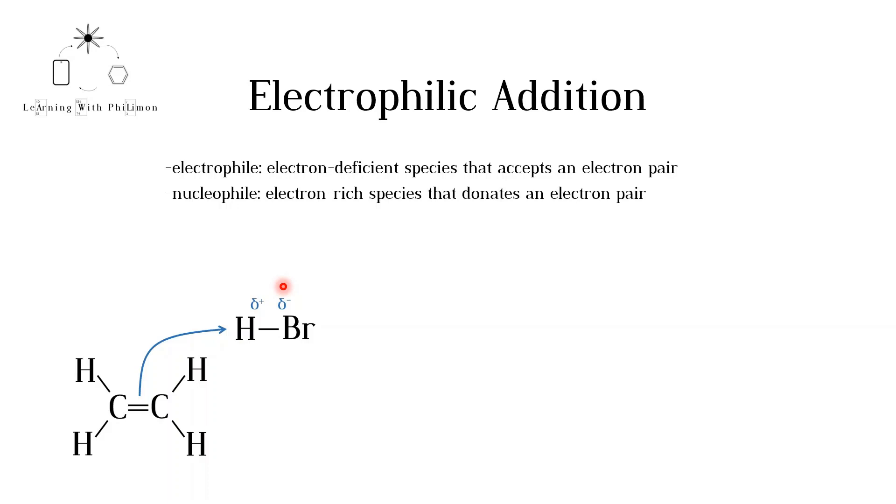As we know, hydrogen can only form one covalent bond. So as the bond between carbon and hydrogen forms, the bond between hydrogen and bromine breaks, as denoted by the arrow. As a result of this first step, a bromide ion Br- and this carbocation intermediate is formed. A carbocation is a compound that contains a positively charged carbon atom.